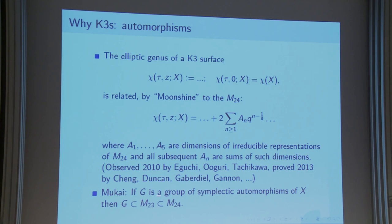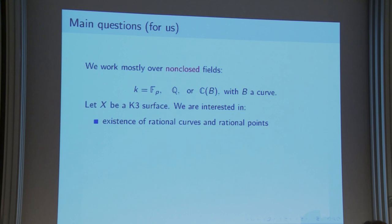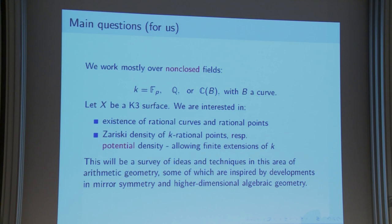On the geometry side, the main questions for us concern working over non-closed fields like finite fields, number fields, or function fields of a curve. The questions we want to ask are: are there rational curves or rational points? When they exist, are they dense, perhaps in the Zariski topology or potentially dense after finite extensions of the ground field? I'd like to survey some ideas and techniques in arithmetic geometry, some inspired by developments in mirror symmetry and high-dimensional algebraic geometry.